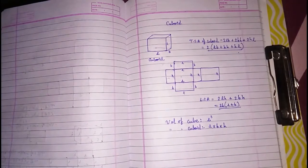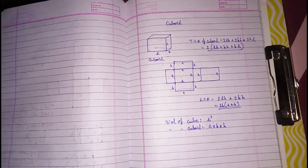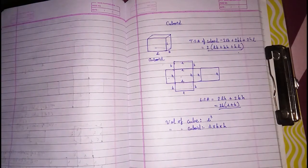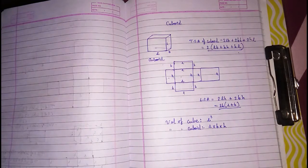So this way we can find the total surface area, lateral surface area, and volume of cube and cuboid. Similarly we can find these for cylinder, cone, and hemisphere, which I am going to explain in my next video. Please subscribe to my channel, click the like button, and thank you so much for watching.